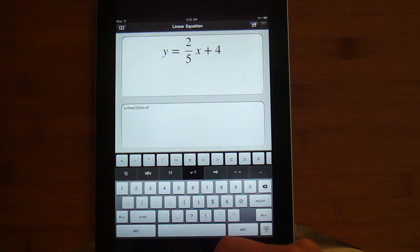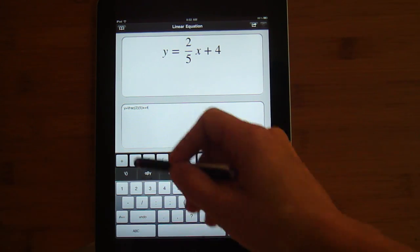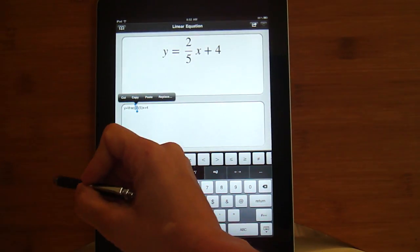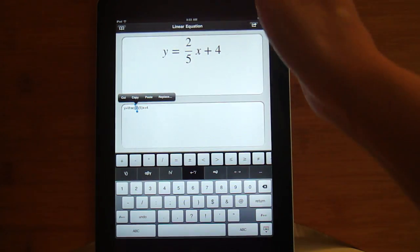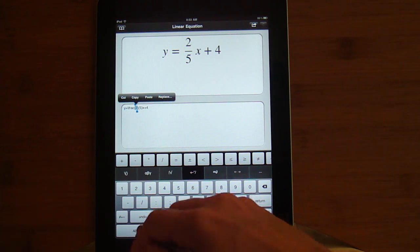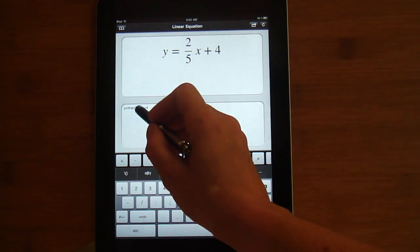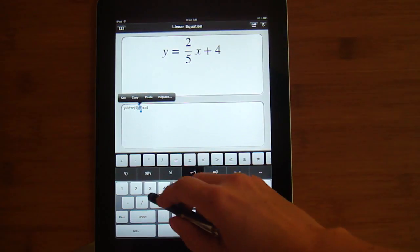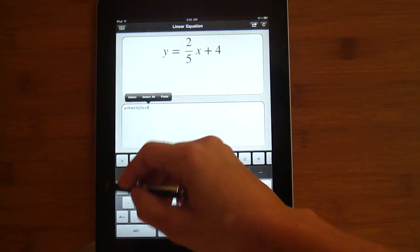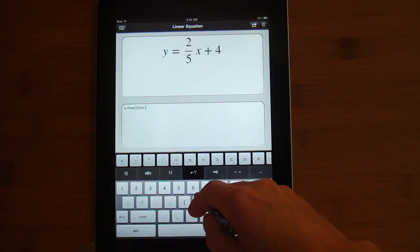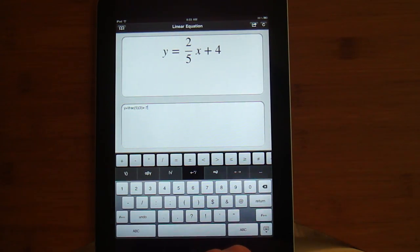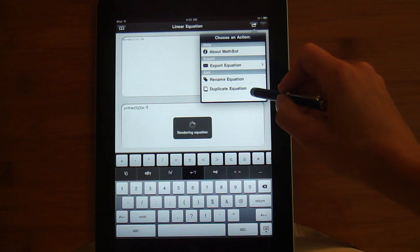Now I'm going to make one more of these equations. Depending on how many equations you want to have on your worksheet or test, go through and do however many equations you're going to be using. I'm just going to make that a minus this time. Export it to the photo album.